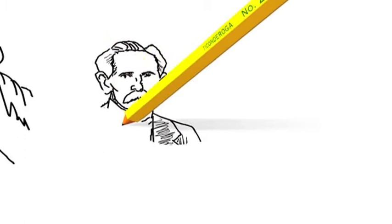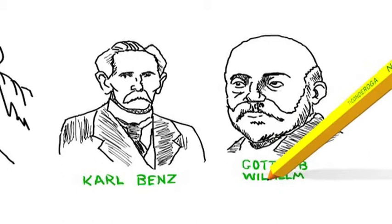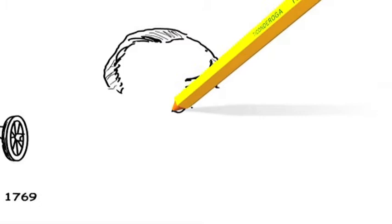While many credit Carl Benz or even Gottlieb Wilhelm Daimler as the pioneers of the first automobile at the end of the 19th century, credit should also be given to Frenchman Nicolas Joseph Cugnot whose steam-powered road vehicle was the first of its kind in 1769, or Nicolas Otto for inventing the first effective gas motor engine in 1861.